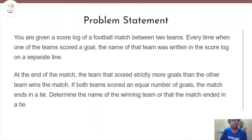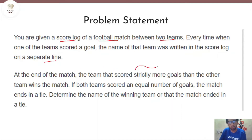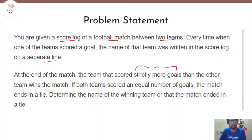We are given a score log of a football match between two teams. Every time one of the teams scores a goal, the name of that team was written in the score log on a separate line. At the end of the match, the team that scored strictly more goals than the other team wins. If they both scored an equal number of goals, the game ends in a tie. We need to find out the winning team or a tie.